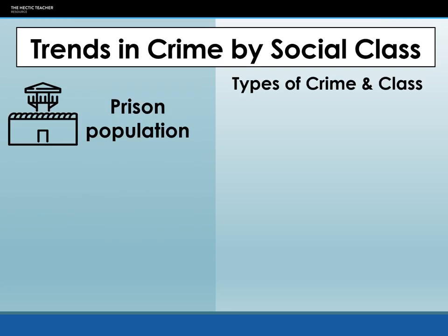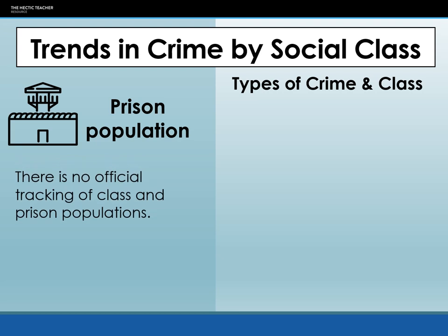When we're looking at trends in crime by social class we break it down into two areas: prison population and arrests by the police, and the types of crime and how that relates to class. In terms of prison population, there's no actual official tracking of class within prison populations, and there are a number of reasons for that. The main one being that class is a very difficult concept to quantify, and depending on how you define different levels of social class will determine where somebody sits.